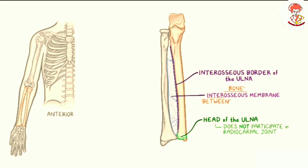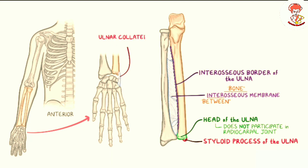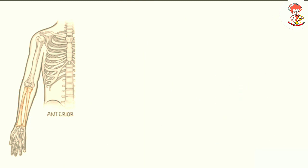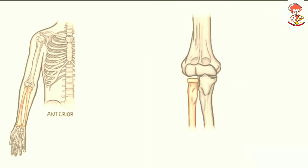The shaft of the ulna ends with a round area called the head of the ulna, which stops short and does not participate in the radiocarpal joint of the wrist. Towards the posterior side of the head of the ulna there is a small bony projection called the styloid process of the ulna, which is where the ulnar collateral ligament of the wrist attaches.